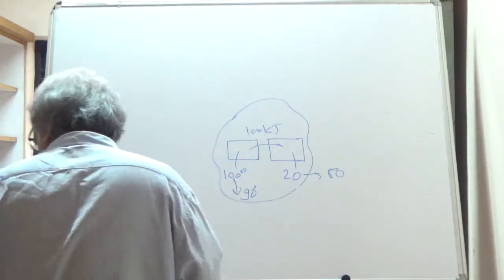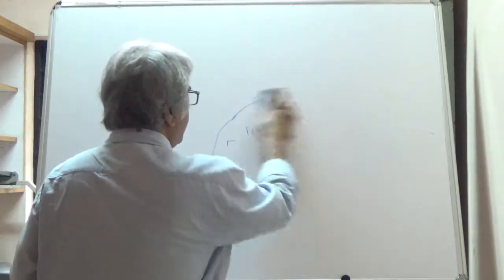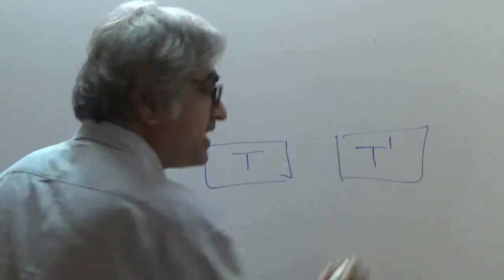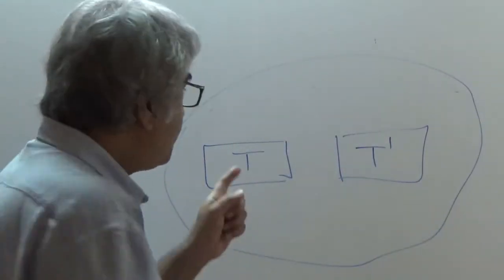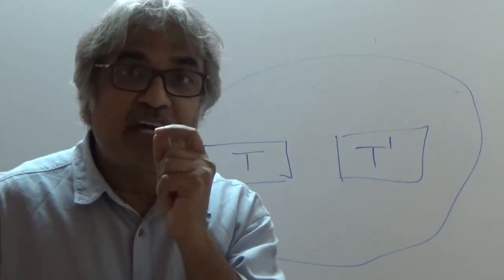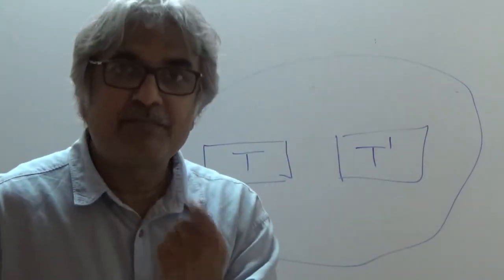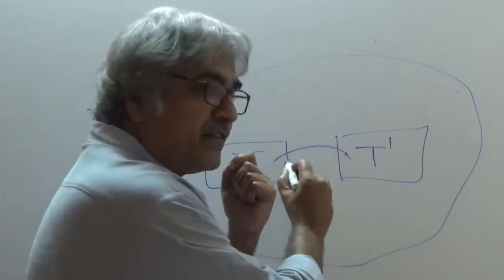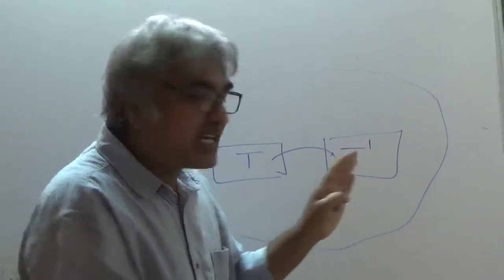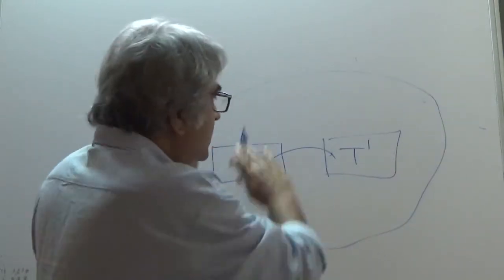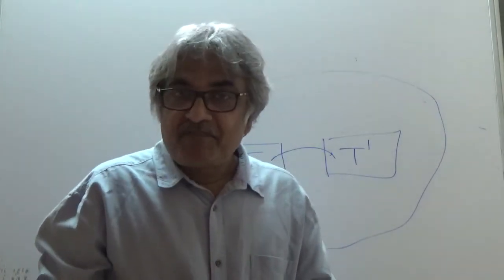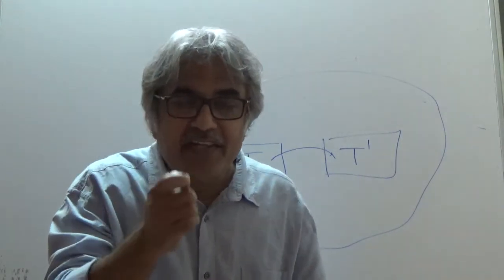Imagine two bodies — one at temperature T and one at temperature T'. If the temperature difference between them is infinitesimally small — nearly zero but not exactly zero — then the actuating force has become infinitesimally small. In that case, heat transfer from one body to the other is reversible. The surroundings are unaffected, and any change in the system can be restored.